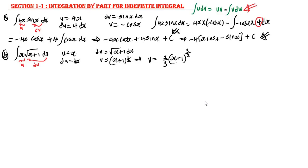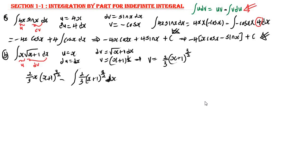All we need to do is plug our values into the formula. u is s and v is (2/3)·(s+1)^(3/2). So the integral equals (2/3)·s·(s+1)^(3/2) minus the integral of v·du, which is the integral of (2/3)·(s+1)^(3/2) ds. Now we have to evaluate the integral on the right side.